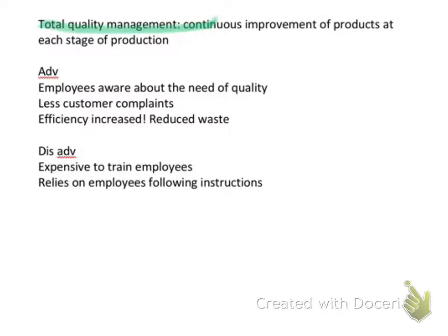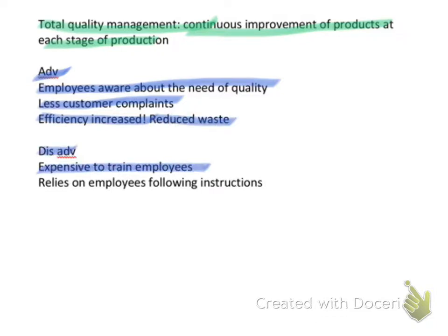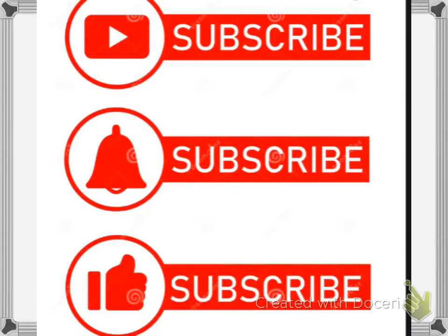The third method is Total Quality Management, which is a continuous improvement of products at each stage of production. The advantages are that employees are aware of the need for quality, there will be fewer customer complaints, and efficiency is increased which means reduced waste. The disadvantage is that it is expensive to train employees and it relies on employees following instructions.